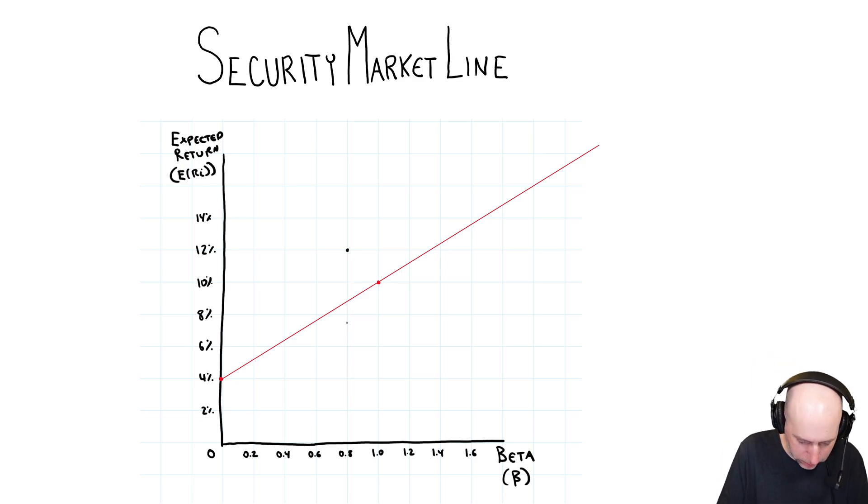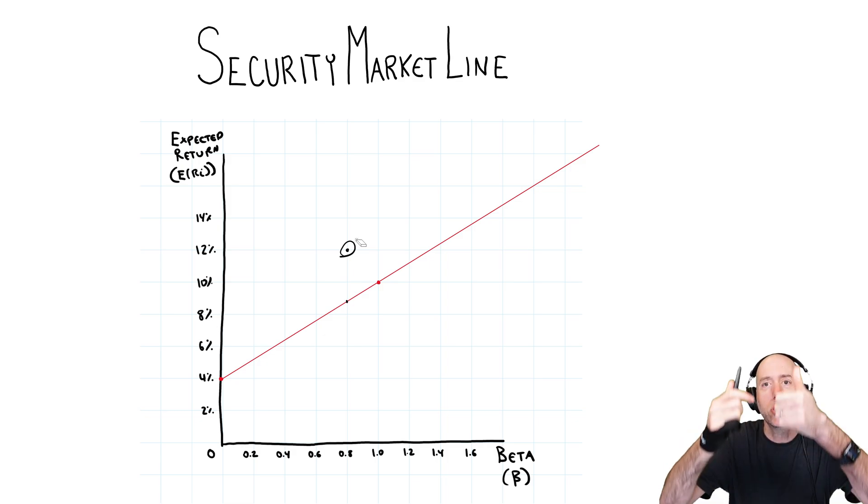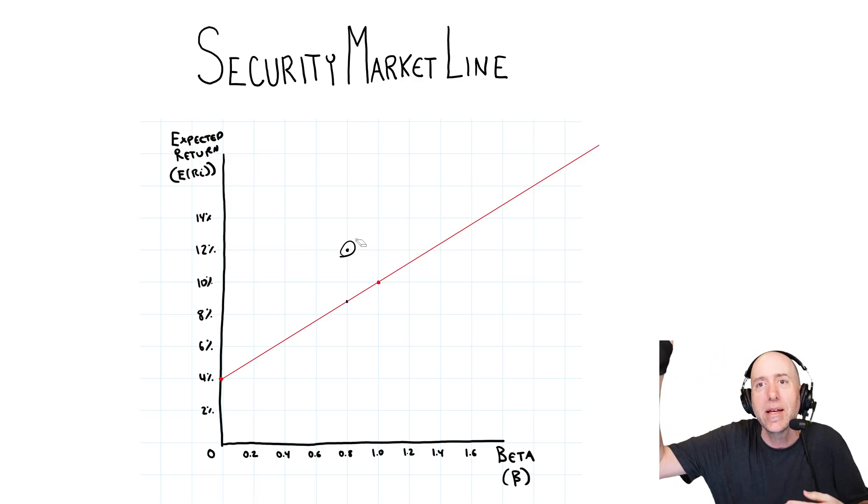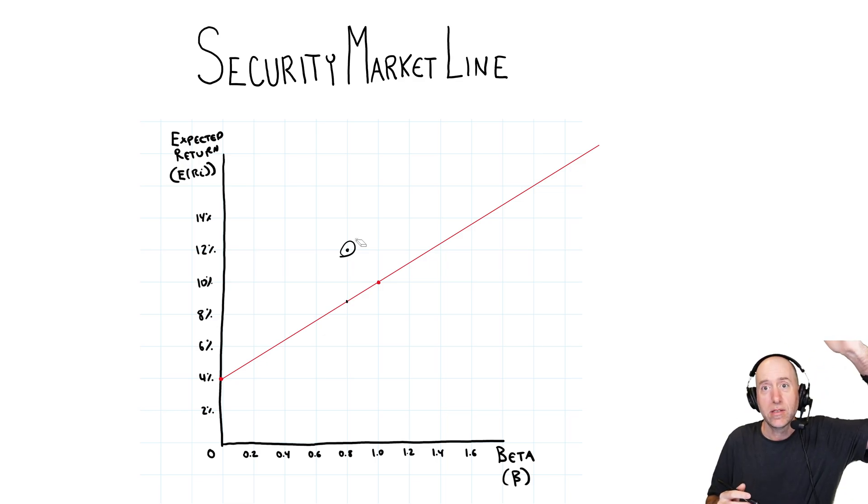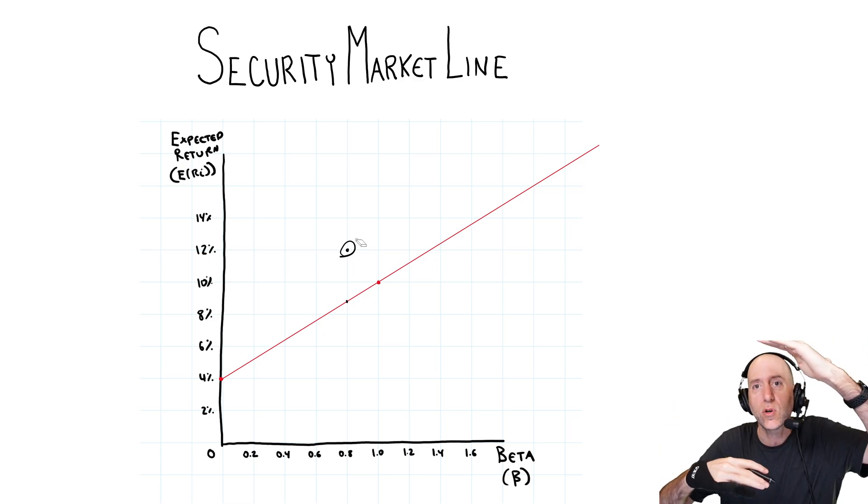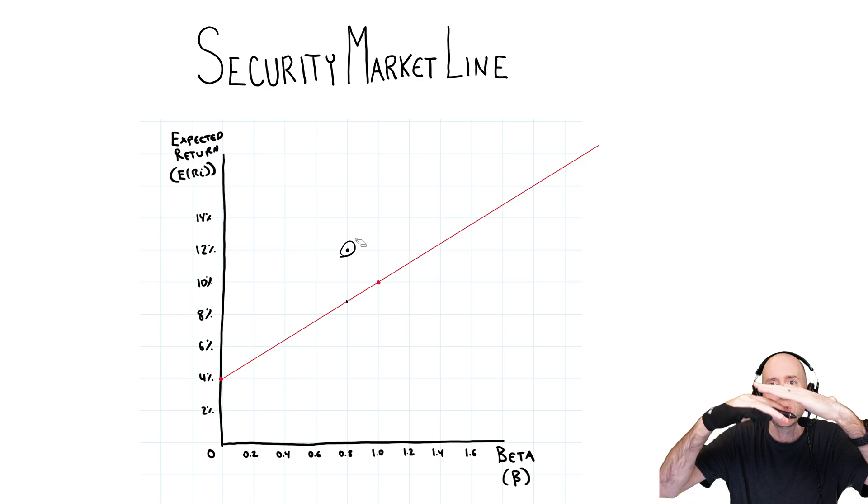A stock with a beta of 0.8 should be returning like 8.75% or something. You could put the numbers into the CAPM and they'll look at it and they'll go, my God, it's returning 12%. And what will they do? They will buy the stock and there will be pressure on the stock price pushing it up because there will be demand for the stock. More and more people buying and the bidding price will go up. And what will eventually happen is the stock price will rise.